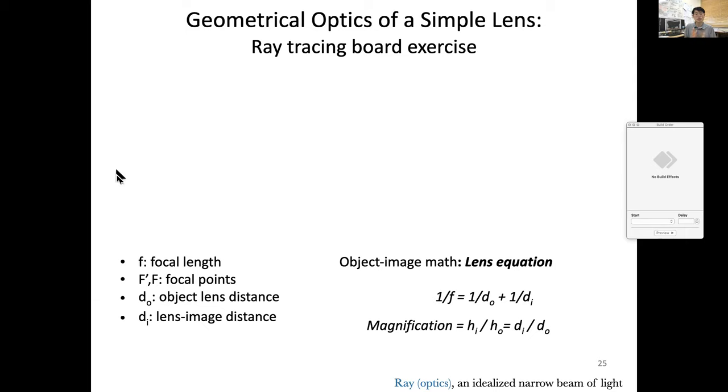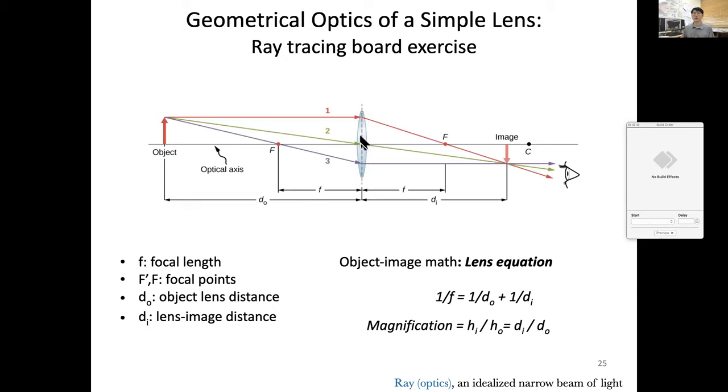So we want to first see how to, by using hand and rulers, we can make simple lens-based optical imaging. So that's ray tracing, and I want to draw this.